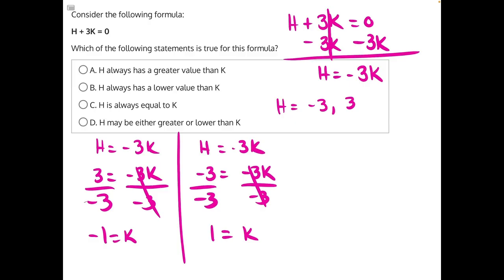So in this case, we have an h value of positive 3 and a k value of negative 1. And this means that h is going to be greater than k. A positive number is always greater than a negative number. So we can eliminate two answer choices. We can eliminate b because it was not lower than k, and we can eliminate c because they are not equal to each other.